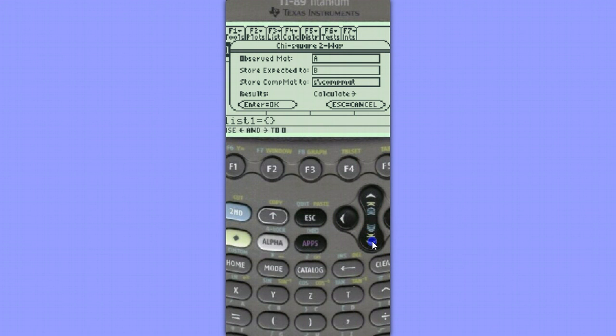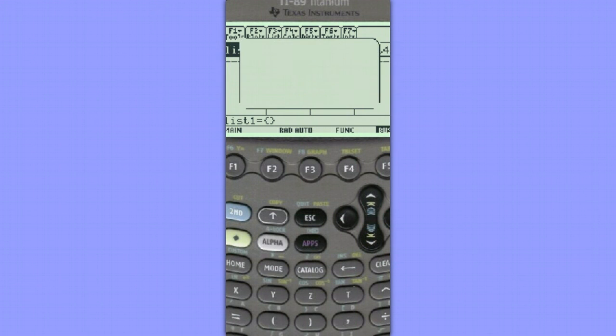I'm going to come down here to calculate and hit enter. We see our Chi-squared test statistic is 18.2 and our p-value is very small, .001. This means that this is a statistically significant difference, that there is a difference in the true distributions of entrees ordered when different types of music are played.